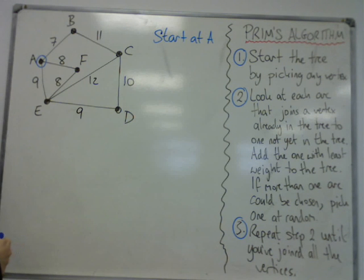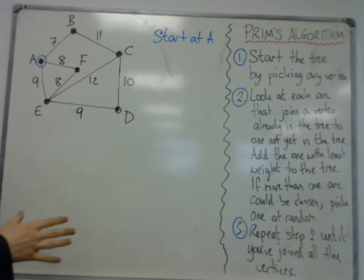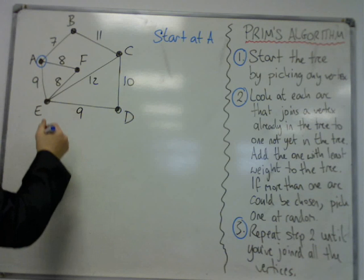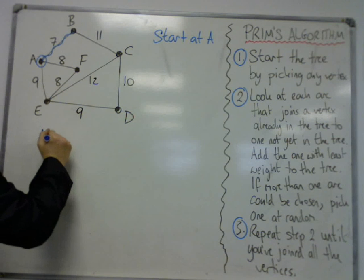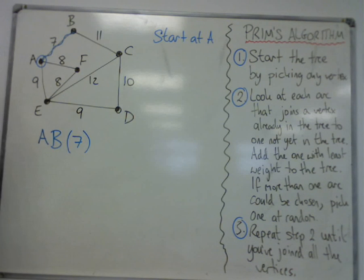So at A, what we do is we look at each of the edges coming out of A and we pick the shortest one. So that would pick A to B. So I make sure I'm taking a note that the first edge I picked is AB, and it has weight 7. So it's best to keep note of this.